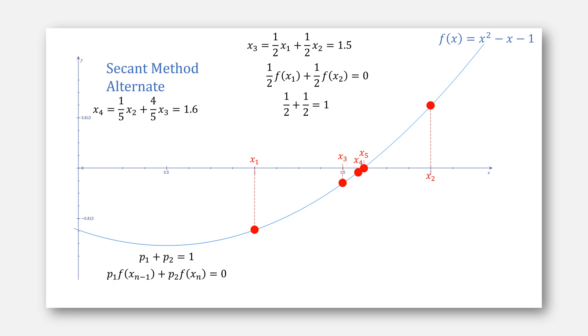The same is true of x4, that one-fifth of the function of x2 plus four-fifths of the function of x3 gives us zero, and one-fifth plus four-fifths is one. To solve this, I'm using this linear system each iteration.